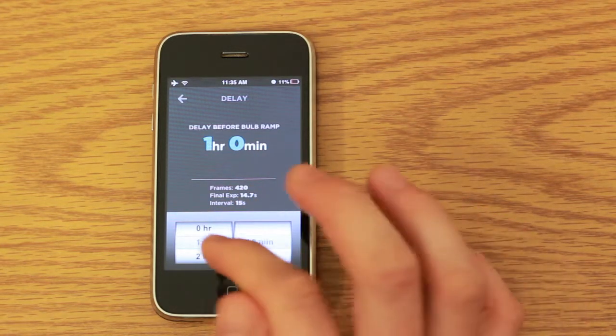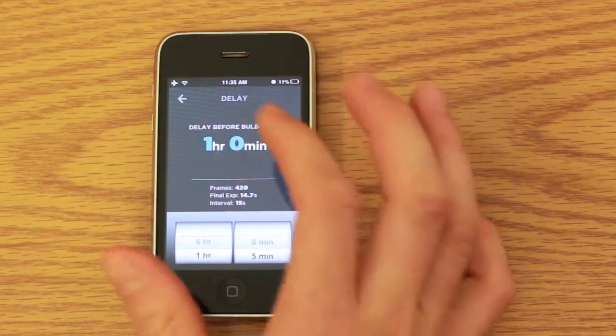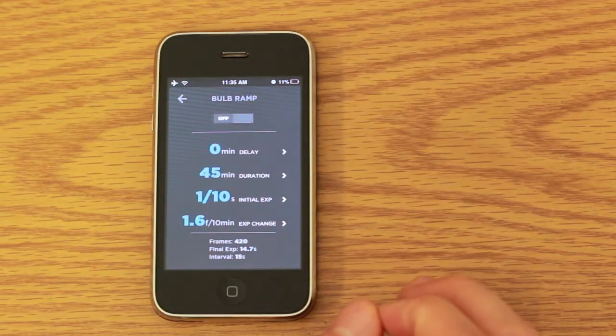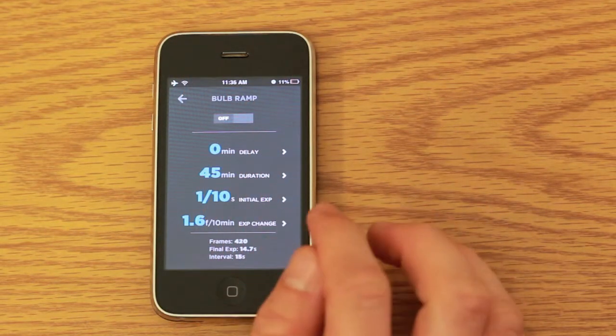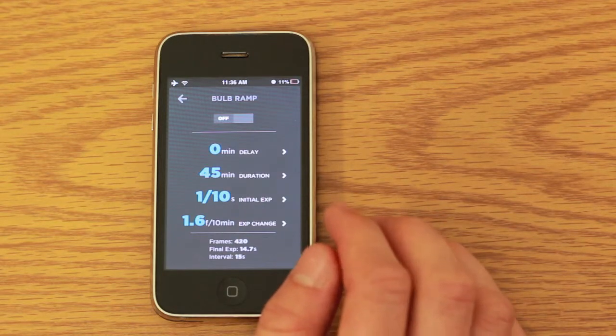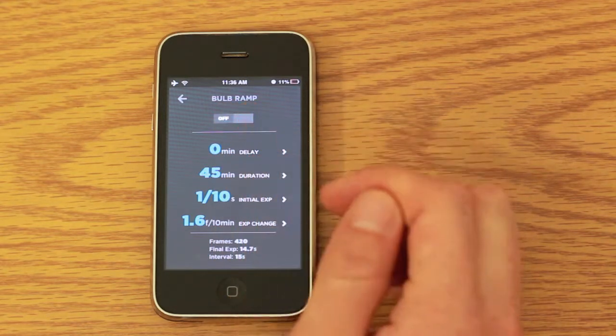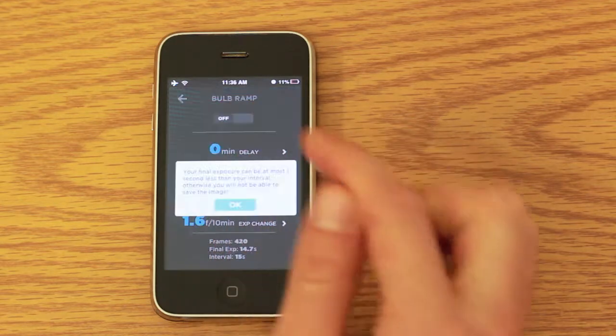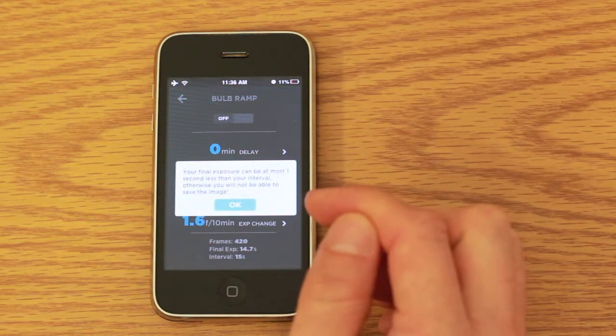Also, as a side note, if you ever need to make changes to your settings, make sure that bulb ramping is turned off while you change them. Nothing will go wrong if you don't do this, but you will avoid an error warning like this one, and you will save yourself some time.